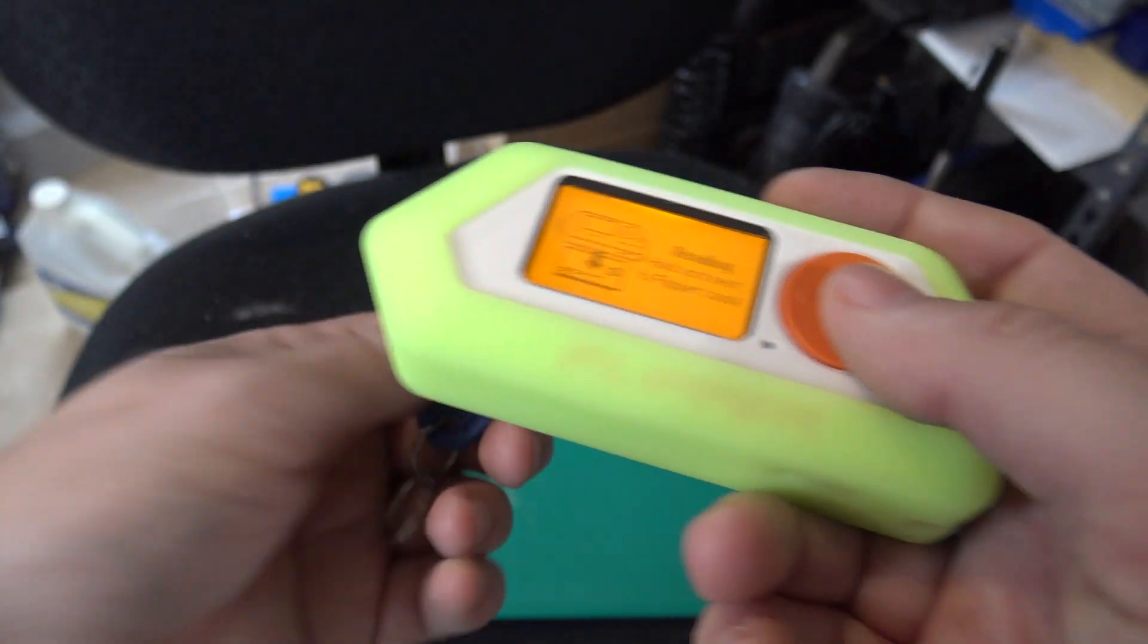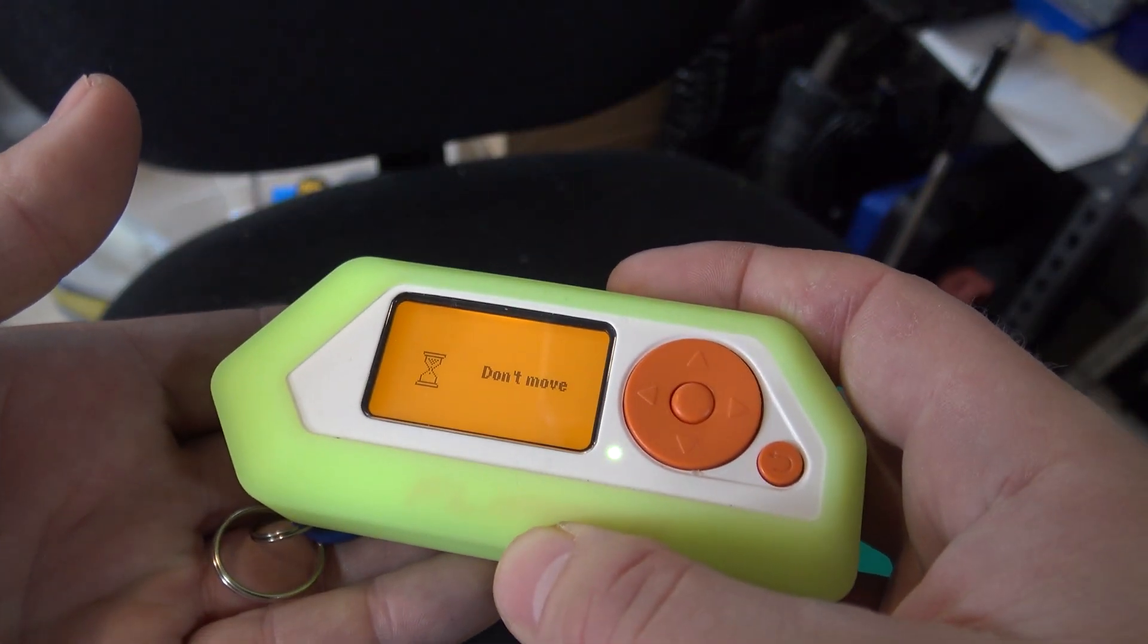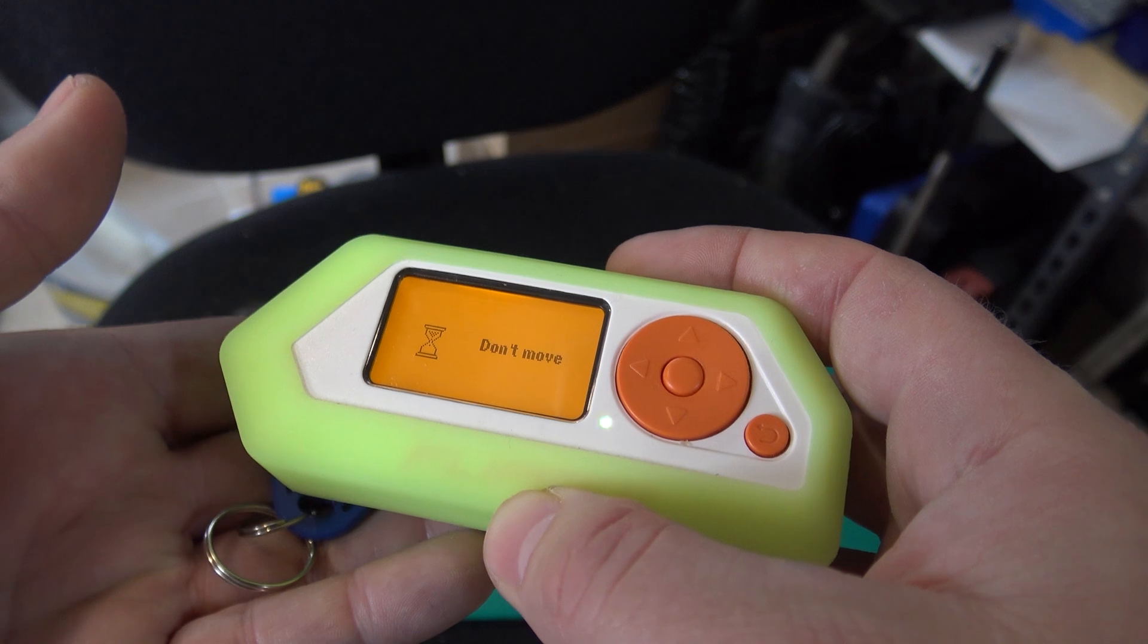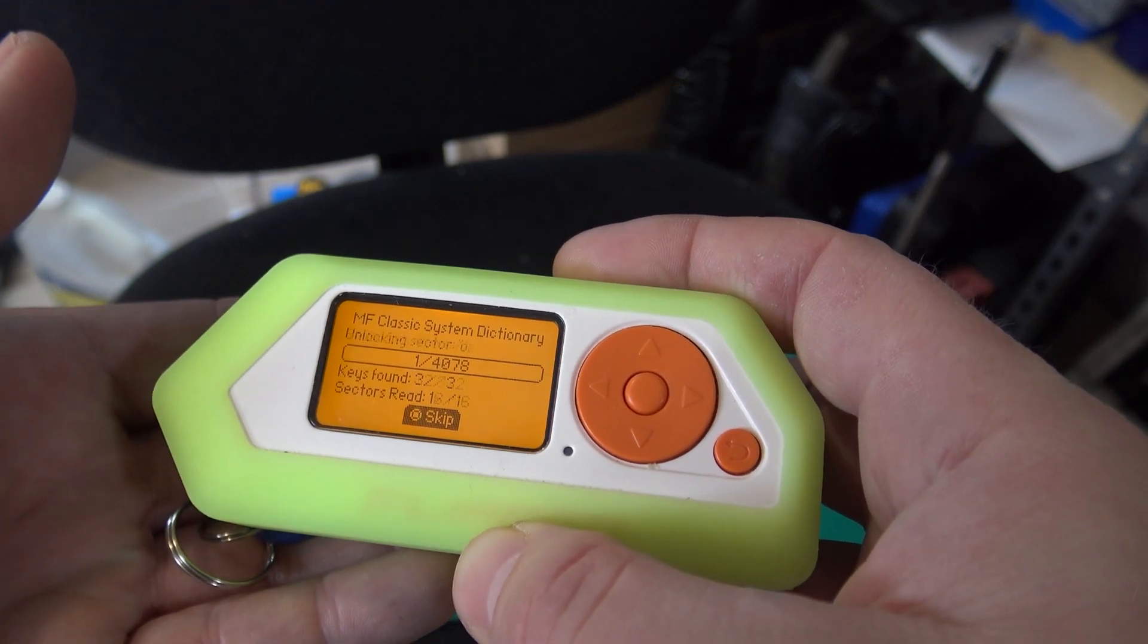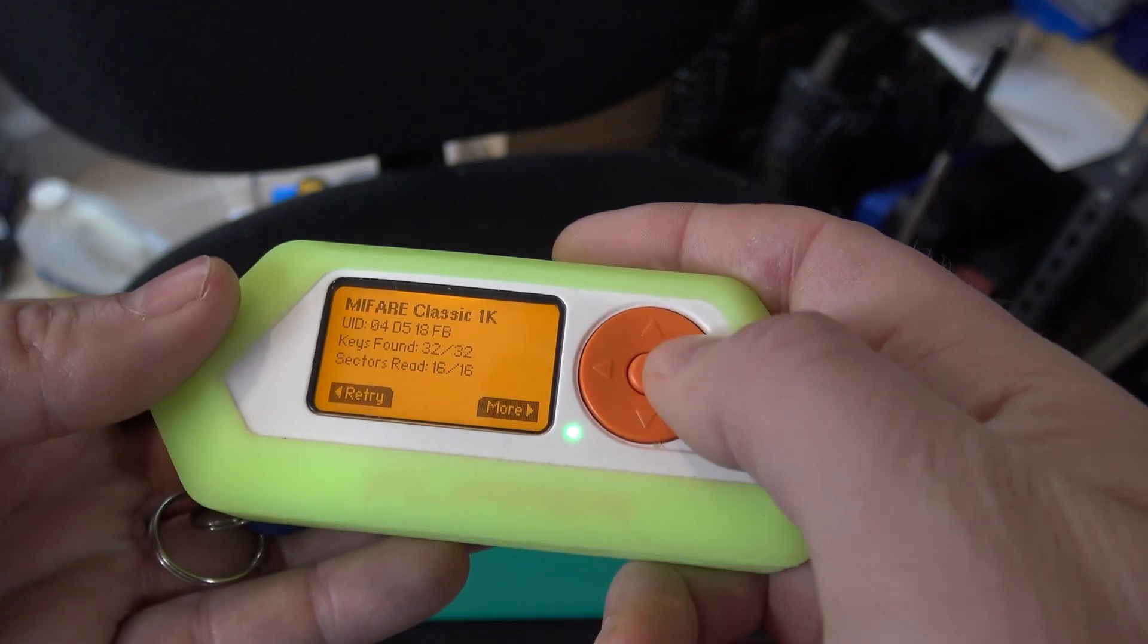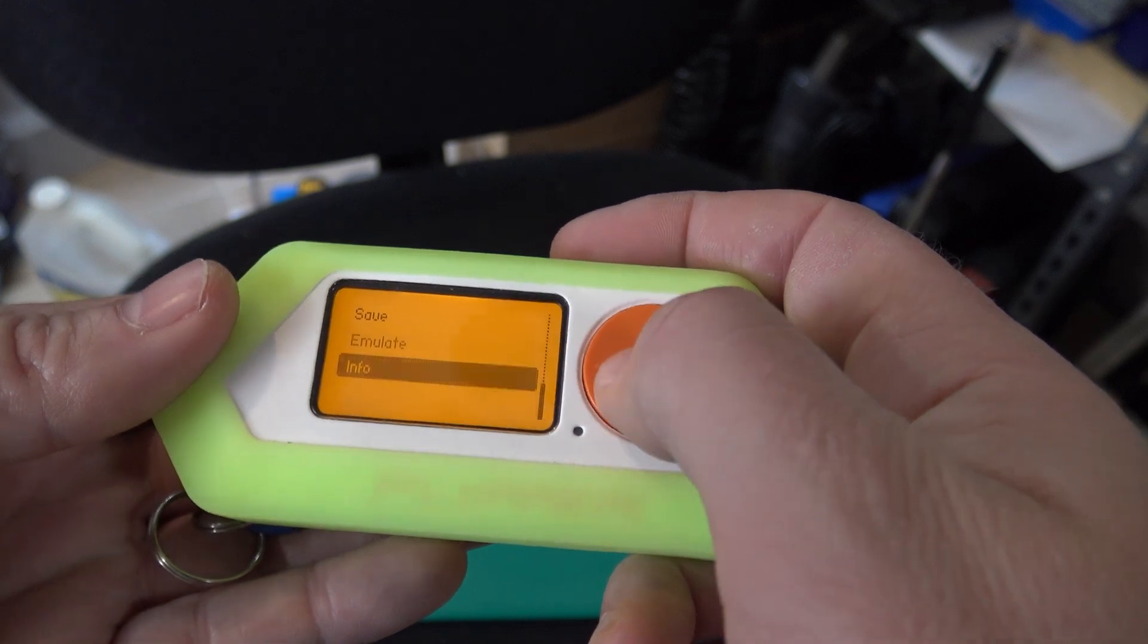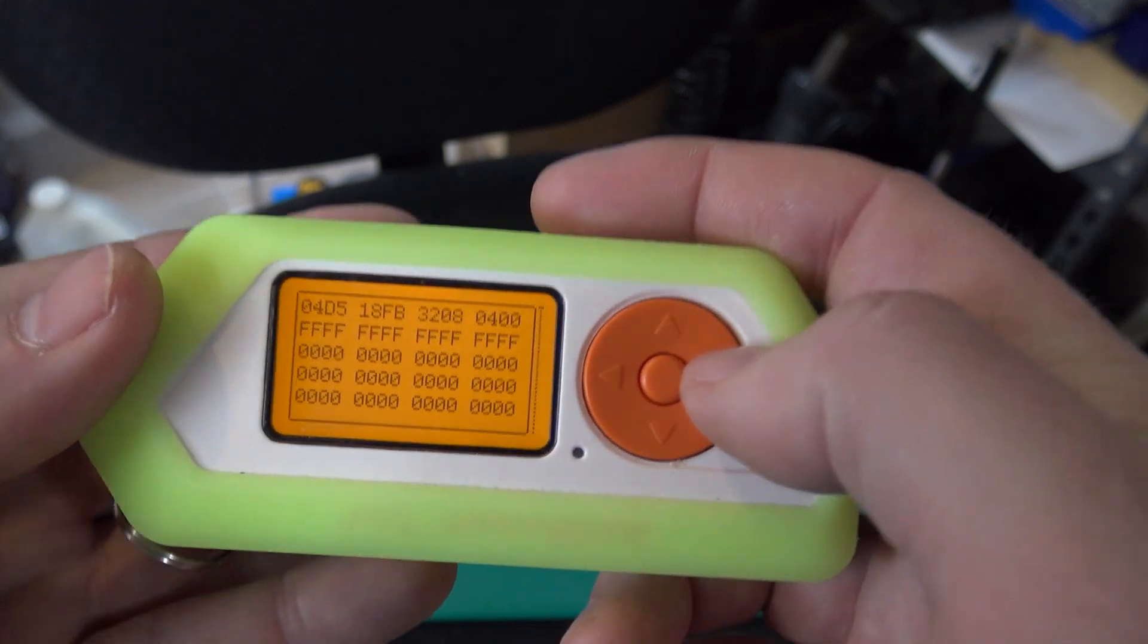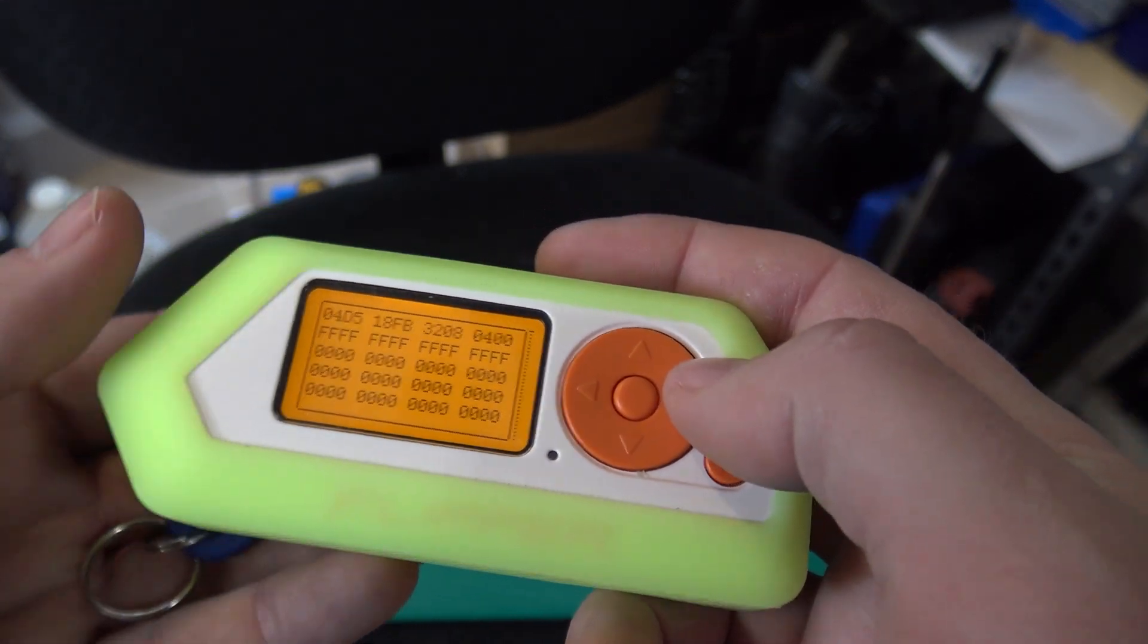Now if I read this blank card here, it shows us the info. It got all F's there because there's no data saved to it.